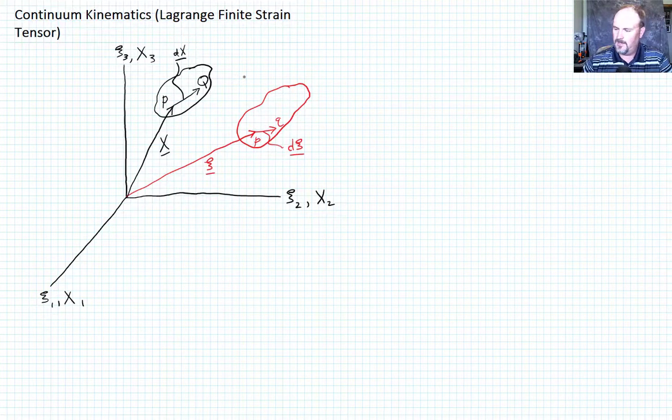So I want to remind you here in this figure of what the deformation process looks like. We have some point P, capital P, and its location is represented by the vector capital X. And during some motion, some deformation, the point P moves to the point little p, and that location is at x.